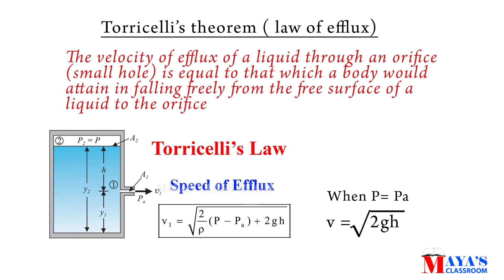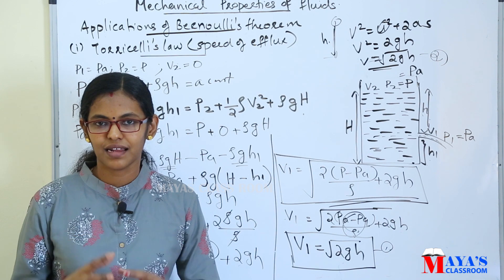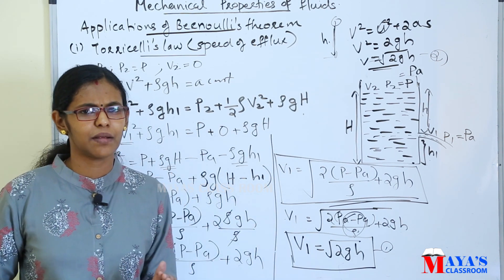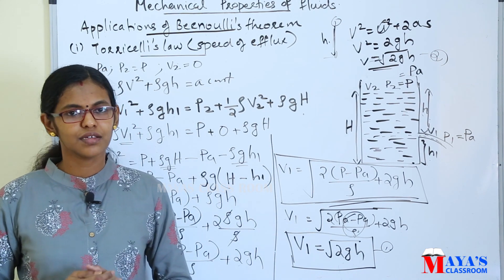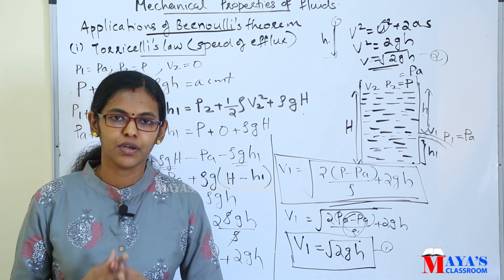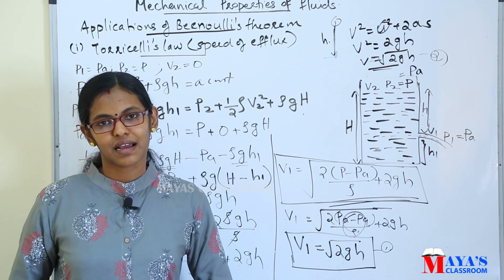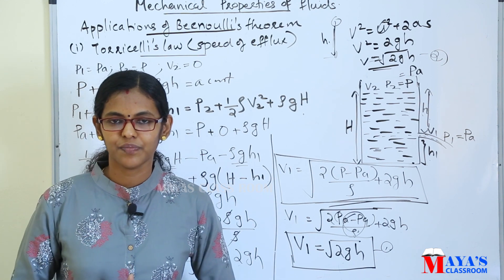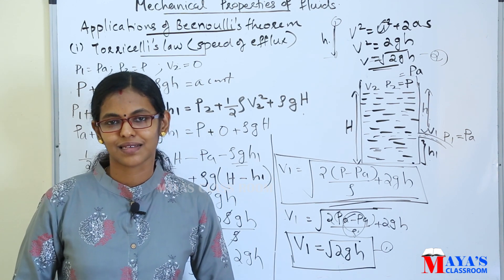The velocity of efflux of a liquid through an orifice is equal to that which a body would attain in falling freely from the free surface of the liquid to the orifice. This is Torricelli's theorem: V equals root of 2gh. I will discuss another special application in the next class. Thank you. Namaskaram.